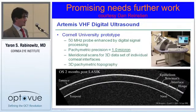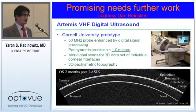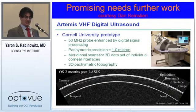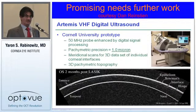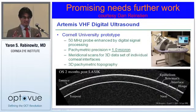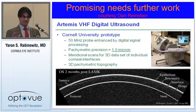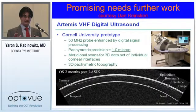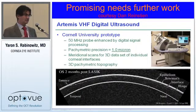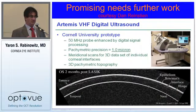By combining OCT and videokeratography side by side — which we routinely do in our practice — even without these formulas, you can look at a topography map, see whether it may be abnormal, then look at the OCT to confirm thinning in an area where there shouldn't be thinning. The formulas are mainly a research tool, but from a clinical point of view it's a very practical and reliable screening approach.